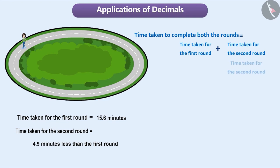Therefore, to find out the time taken for completing the second round, we have to subtract 4.9 from 15.6. Can you think of how we do this? Think for a while.